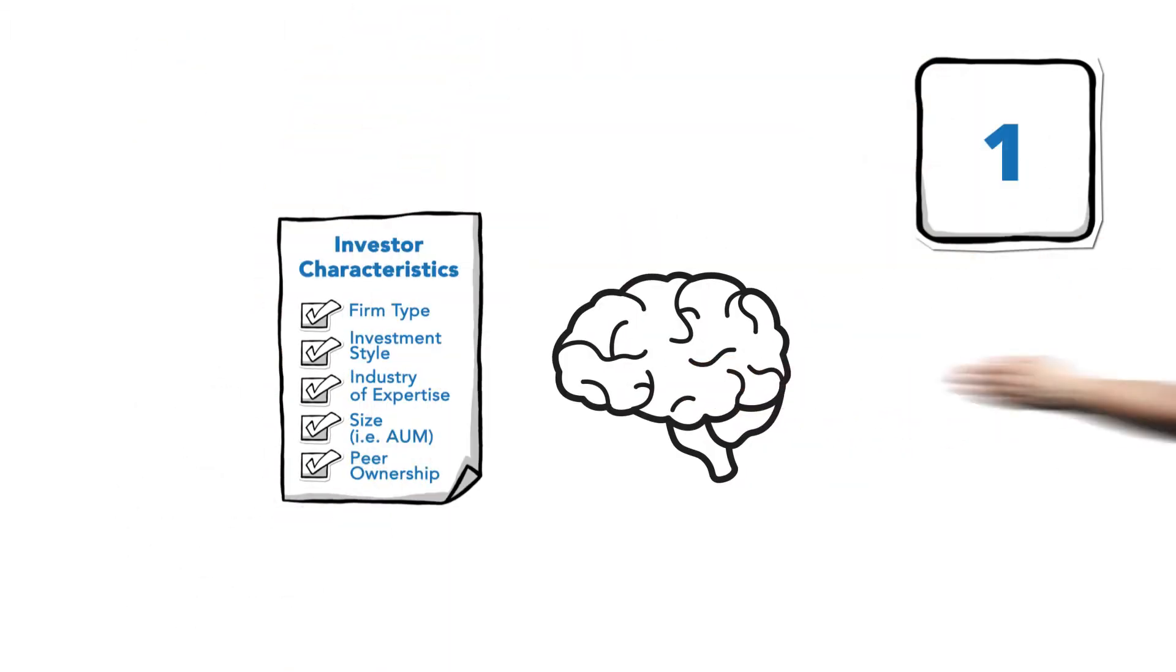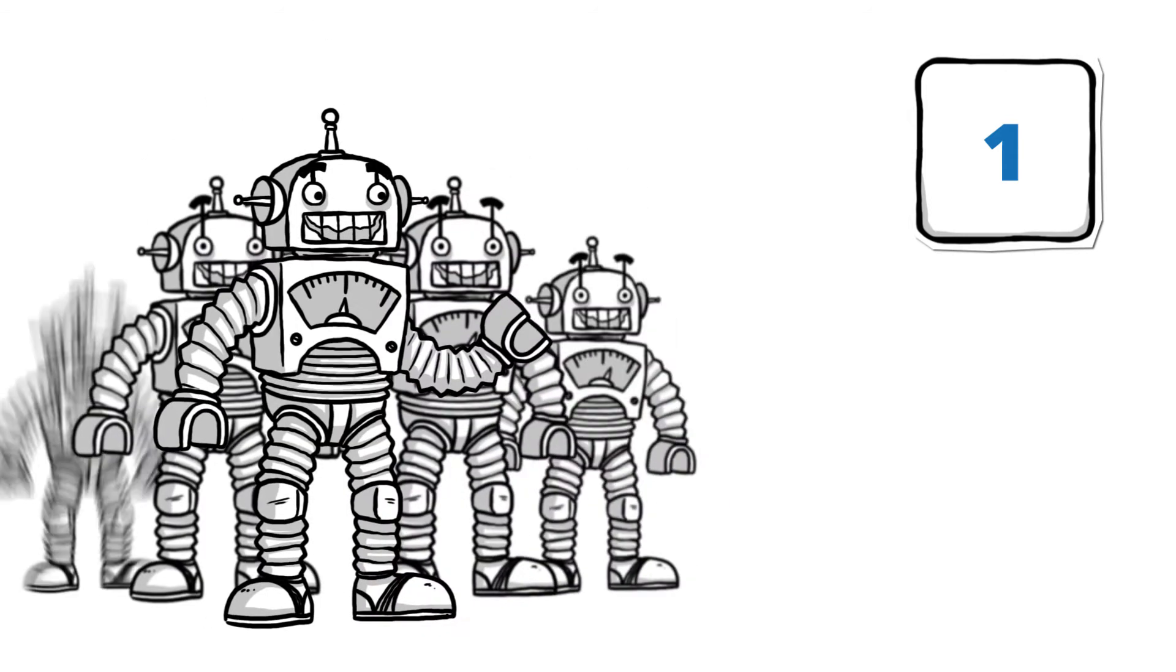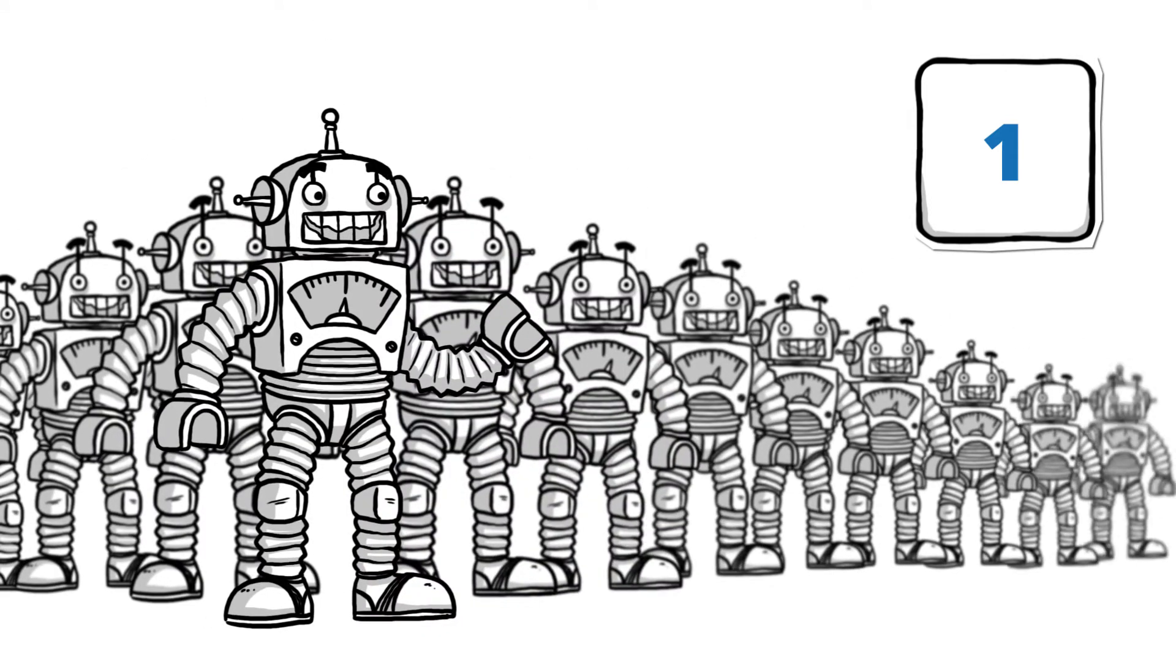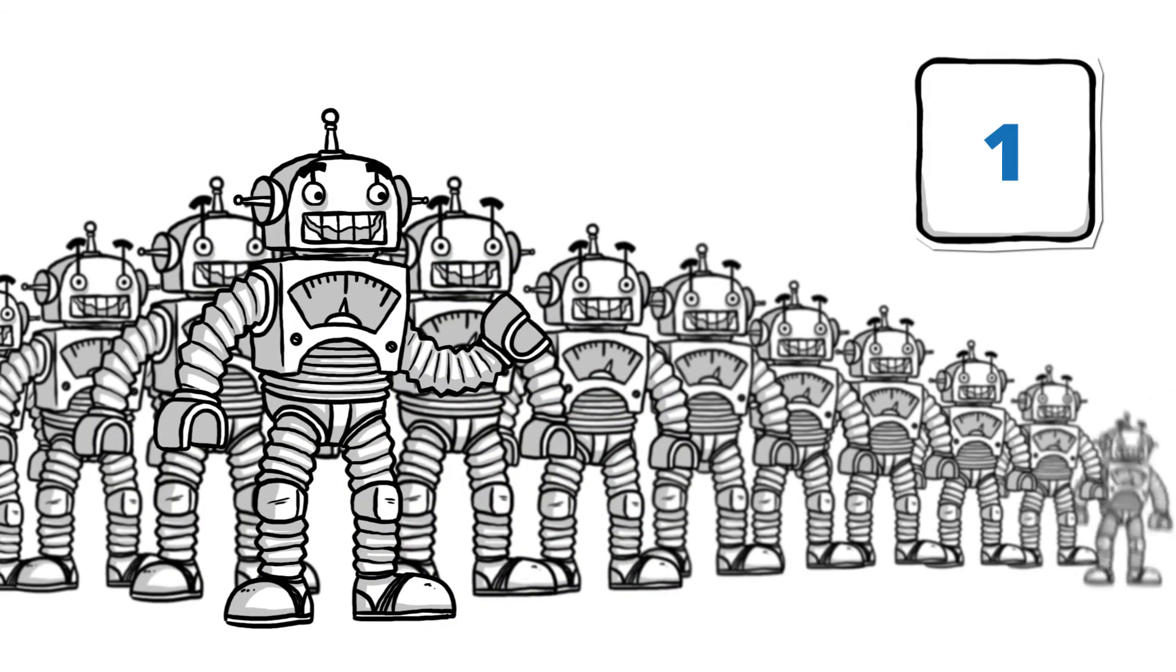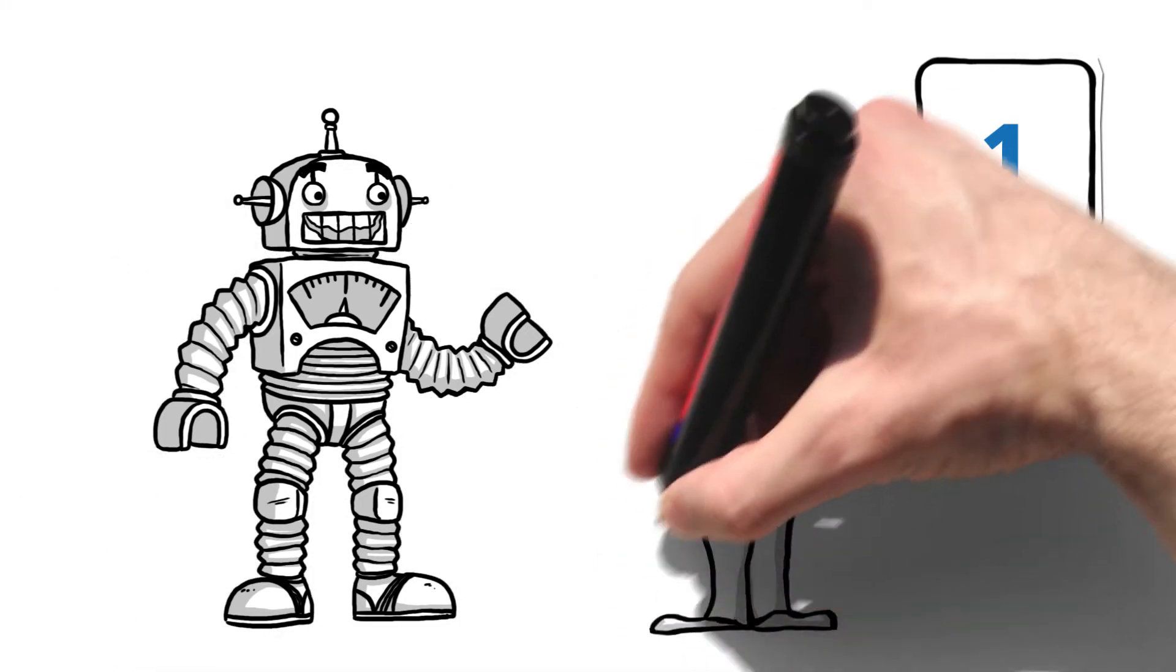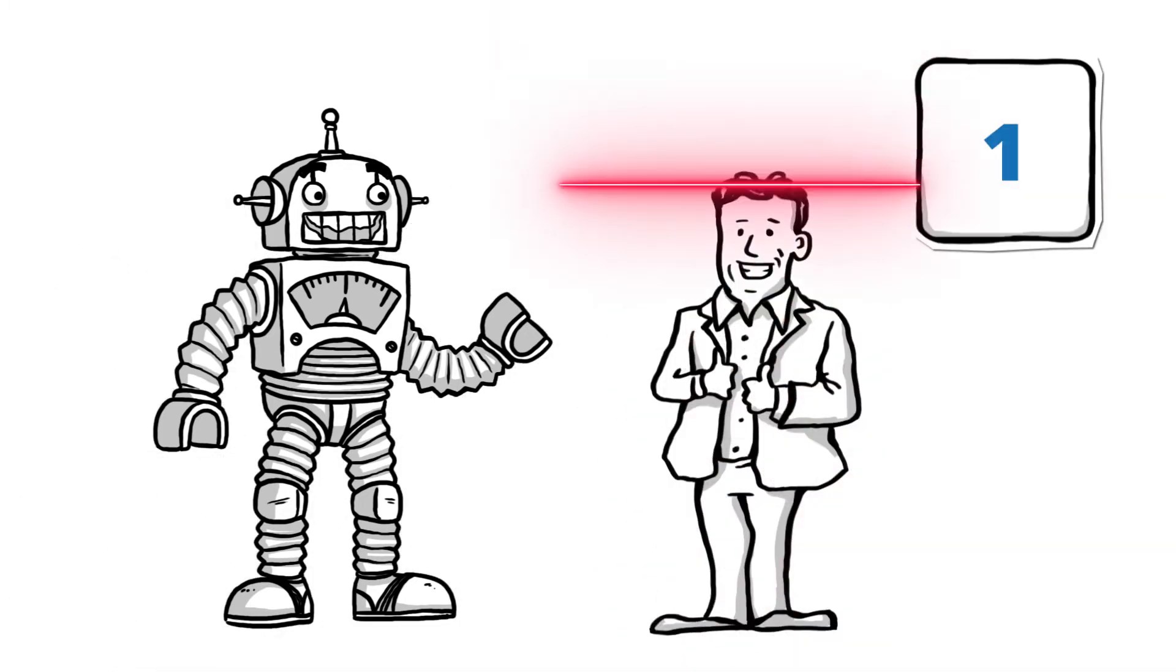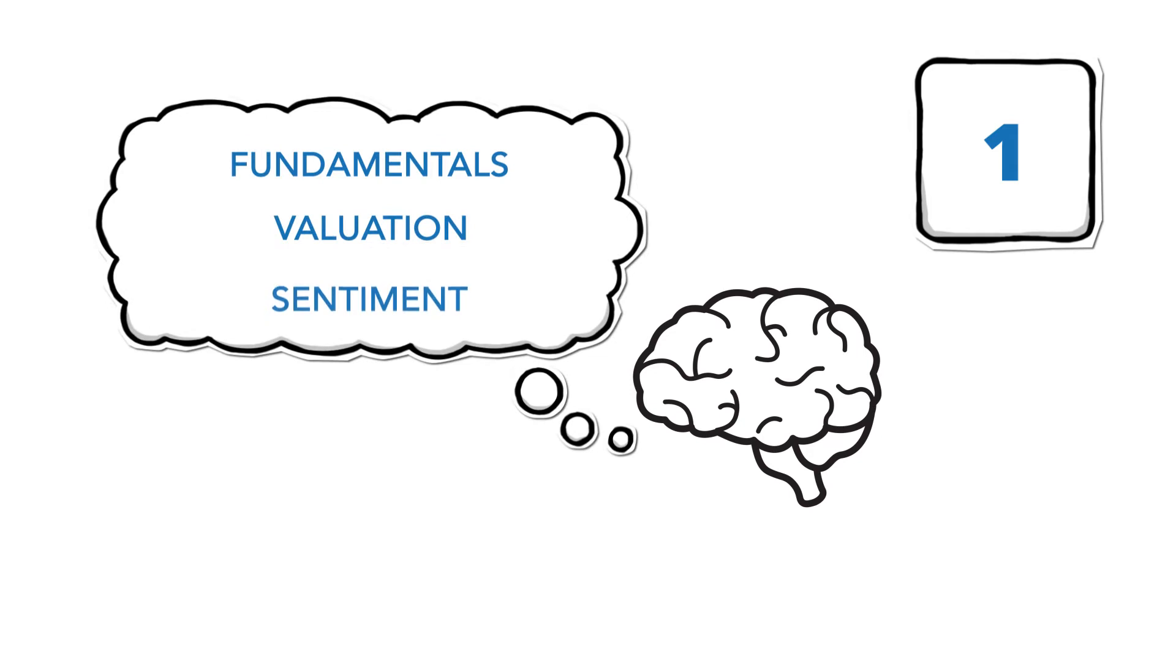Introact adds another layer of intelligence by building a unique machine for each of the 5,000 largest institutional investors. Each machine studies the buying and selling behavior of a specific investor, considering hundreds of factors which we categorize into our proprietary three-pillar model: fundamentals, valuation, and sentiment.